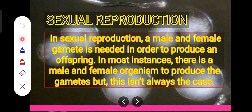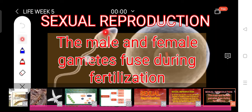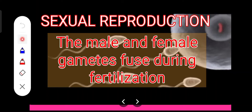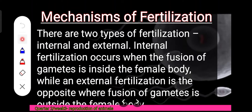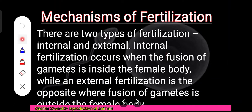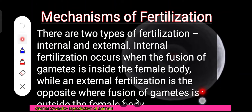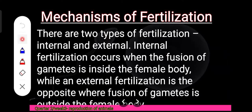In sexual reproduction, the male and female gametes fuse during fertilization. A sperm and an egg unite to form a zygote, which develops into an animal whose genetic information is a combination of the parent genes. There are two types of fertilization: internal and external. In internal fertilization, the fusion of gametes occurs inside the female body. In external fertilization, the fusion of gametes occurs outside the female body.